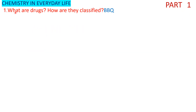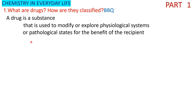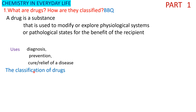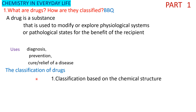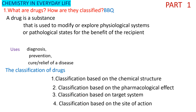What are drugs? How are they classified? A drug is a substance that is used to modify or explore the physiological system. The classification of drugs includes: first, classification based on chemical structure; second, classification based on pharmacological effect; third, classification based on the target system; fourth, classification based on the site of action.